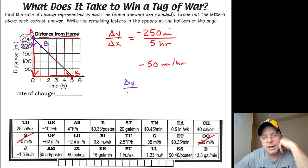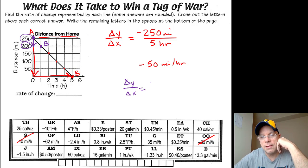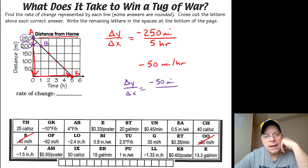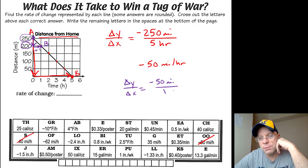This delta y over delta x—if I'm going from 250 to 200, the miles have decreased by 50. And then from there I go one to the right, which is an increase of one hour, so positive one.